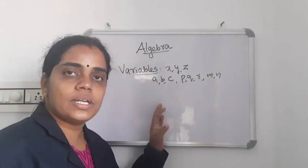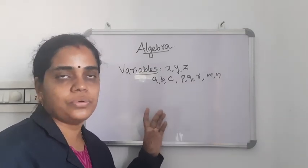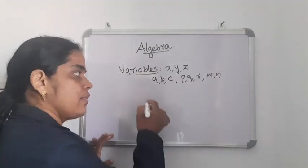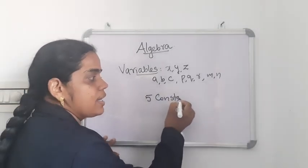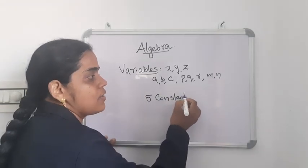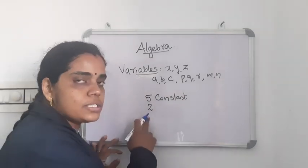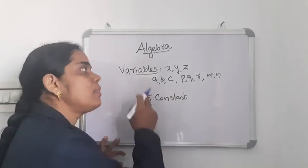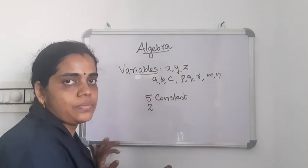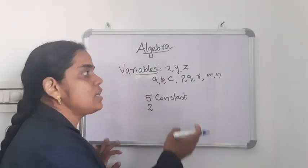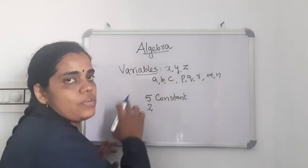All of you know what is a constant. Constant means it has a fixed value. So 5 is a constant — its value is 5 itself. And 2 is another constant — its value is 2 itself. But in the case of a variable, it has no fixed value. According to the situation, the value may change. That is variable.